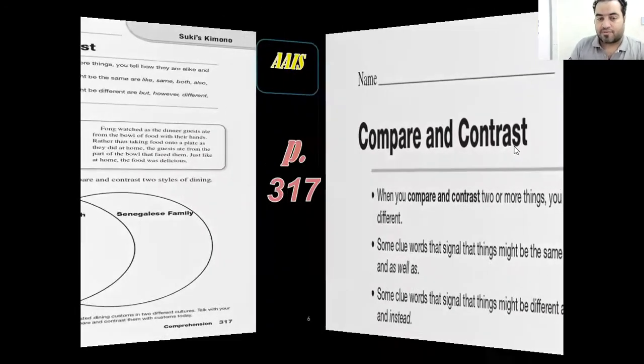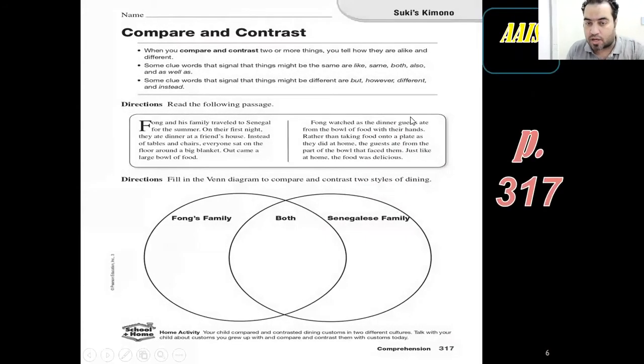So if you have a passage like this or a story like this, and you would like to just differentiate between two things and show how they are similar, show how they are different, which is compare and contrast. Then after reading the story, you have to just fill in the Venn diagram. You have to fill it in.